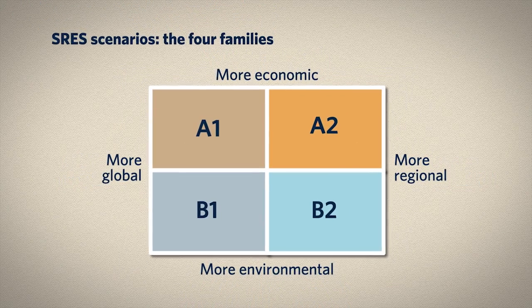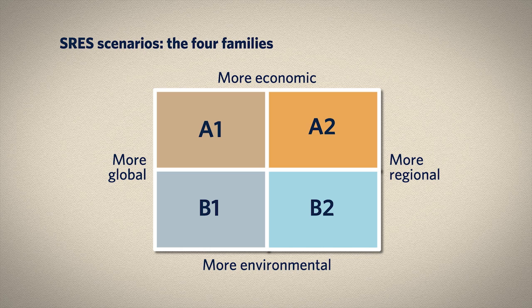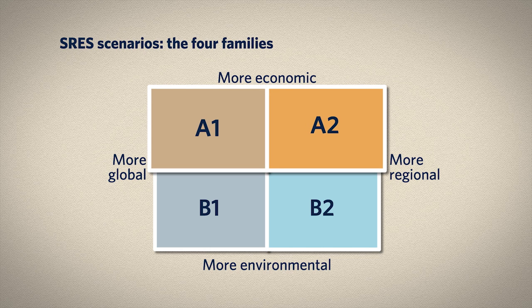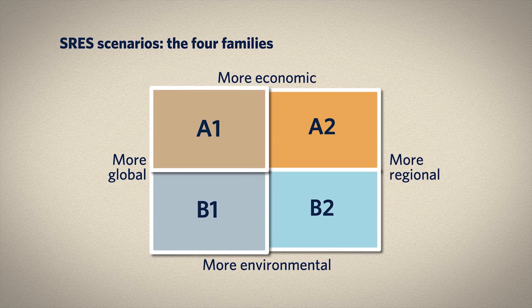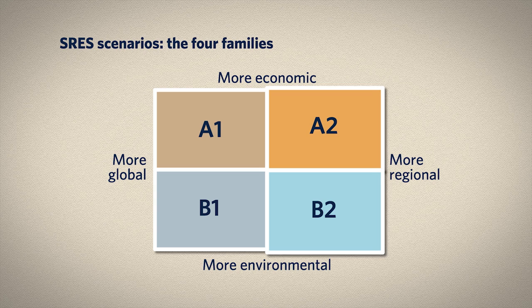Here is a simplified schematic of the SRES families. The two on the top, A1 and A2, thematically tend toward more economic growth in their storylines. The two on the bottom, B1 and B2, tend more toward environmental protection. The two on the left, A1 and B1, describe worlds that are more globally interconnected, and the two on the right describe futures where regional connections are more important.